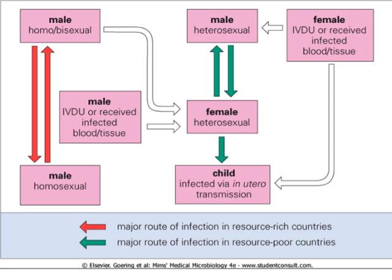Let's talk about routes of infection. I want you to pay attention to the key here: major routes of infection in resource-rich countries versus resource-poor countries. There's another thing — people used to think it's a poor man's disease; well, not necessarily. Also keep in mind the sexual practices happening in a richer population compared to a poorer population, and also some particular professions involved.